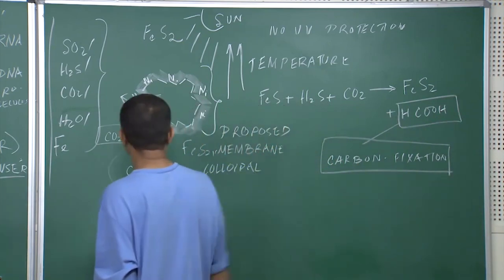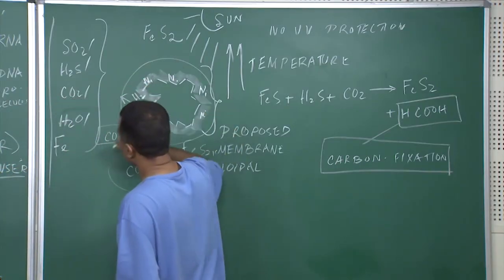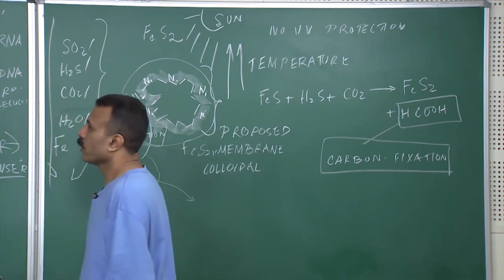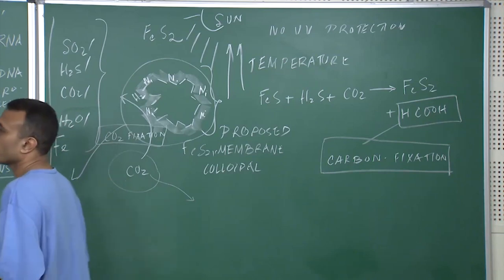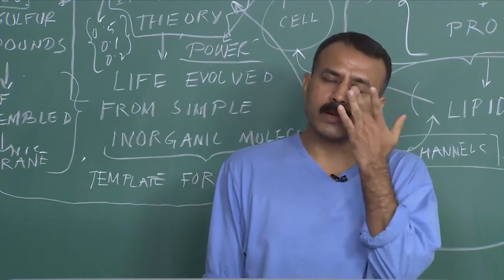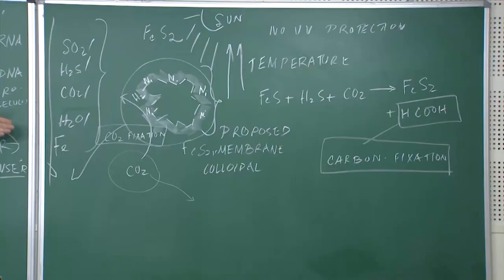This is how possibly this evolution of the first membrane happened. And if you try to correlate this with the lipid bilayer membrane, you will realize that all lipid bilayer membranes have a lot of iron sulfur clusters and there are many iron sulfur proteins. It has been argued by proponents of these theories that possibly those iron sulfur clusters in those proteins have evolved from that proposed FeS₂ colloidal membrane.